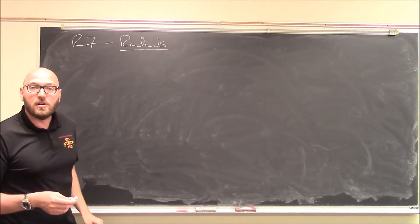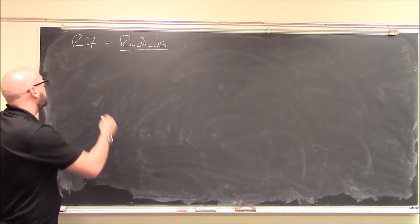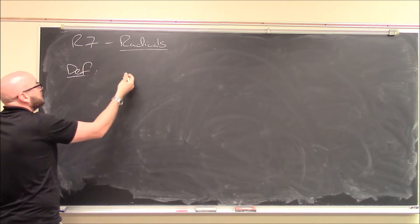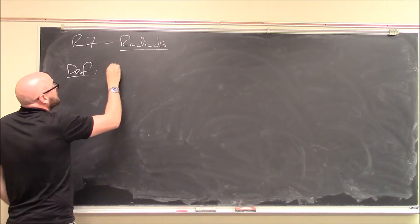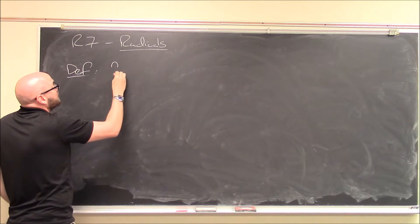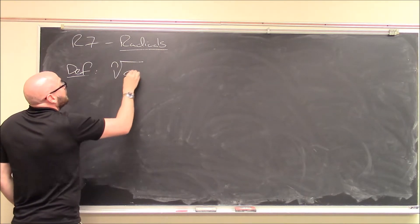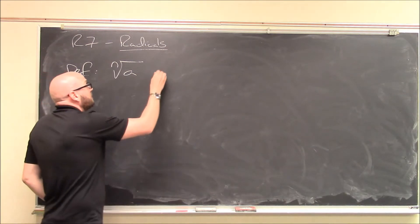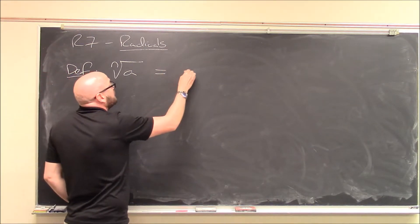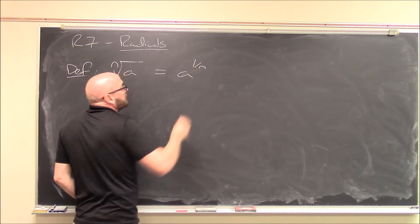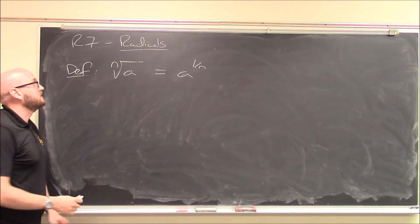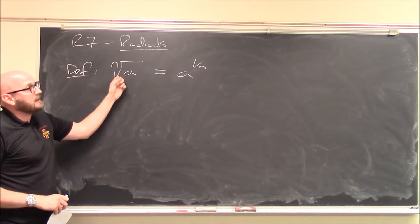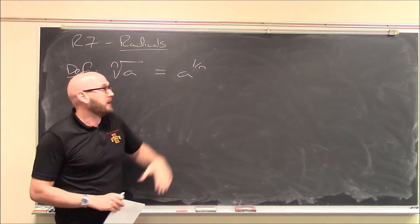Last up from the review chapter R, we've got radicals. We'll start with a definition — what do I mean by a radical? An expression like the nth root of a. We'll define this to be a to the 1 over n, which we worked with in the last section. So the nth root of a is just another symbol for a to the 1 over n.